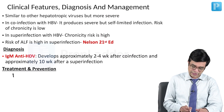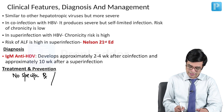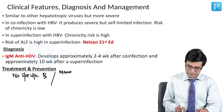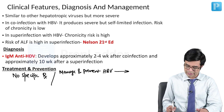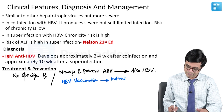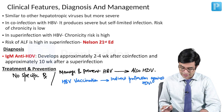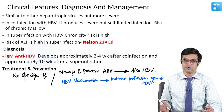For treatment and prevention, no specific therapy is available. However, if you manage and prevent hepatitis B, it indirectly also prevents hepatitis D virus. If you give HBV vaccination, this will indirectly protect against HDV as well. HDV is entirely dependent upon HBV to produce its infection.